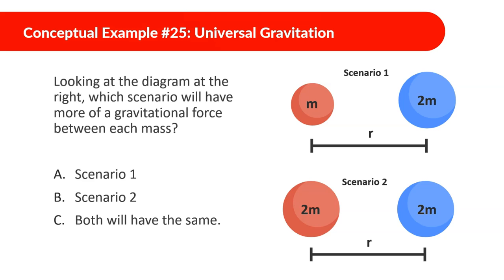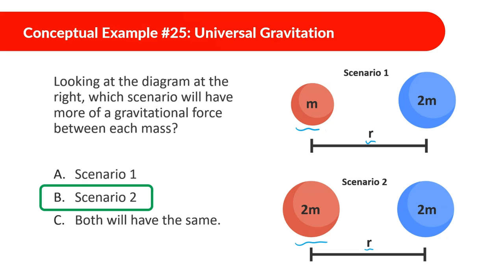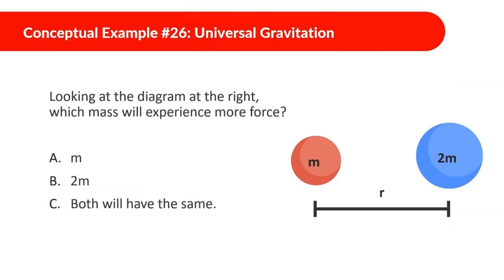Next: the diagrams show the same distance but different masses. Since scenario two has more mass, it will have a greater force of gravity between the objects, pulling them toward each other more strongly.